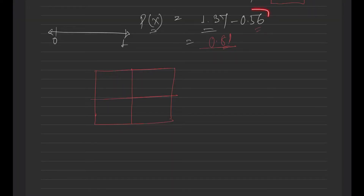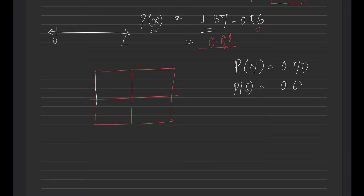Now let's say this is your four-box matrix because we have only two probabilities: probability of N is equal to 0.70 and probability of space is equal to 0.67. This is called the space box and this other one is called your noise box.